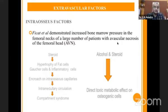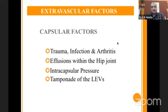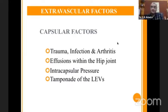Steroids cause hypertrophy of fat cells, Gaucher cells, and inflammatory cells. These cells encroach on the intraosseous capillaries, hampering the intermediary circulation and the compartment of the head. Alcohol and steroids also directly act through their toxic metabolites, which act on the osteogenic cells. Amongst the extra-osseous capsular factors — trauma, infection, arthritis, and effusion within the hip joint — all lead to increased intracapsular pressure, leading to tamponade of the lateral epifascial vessels.